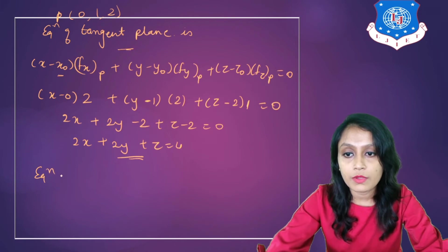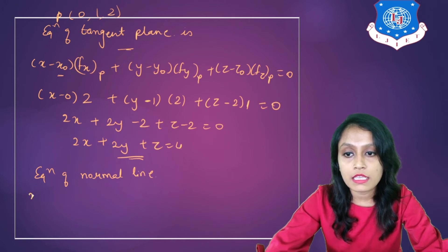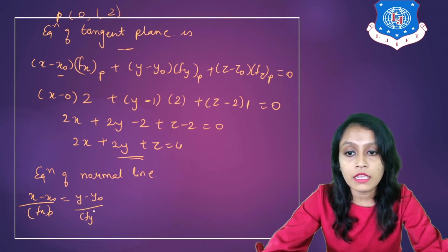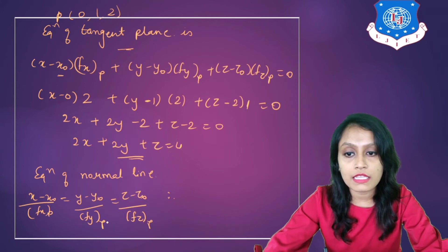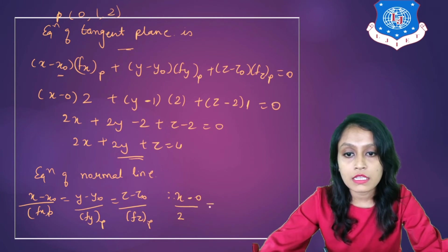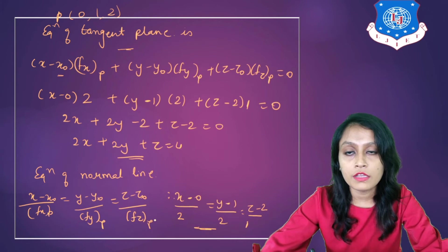Now we find the equation of normal line using the formula: (x − x₀) / Fx = (y − y₀) / Fy = (z − z₀) / Fz at point P. Substituting (x₀, y₀, z₀) = (0, 1, 2) and Fx = 2, Fy = 2, Fz = 1, we get: x / 2 = (y − 1) / 2 = (z − 2) / 1. This is the equation of the normal line.